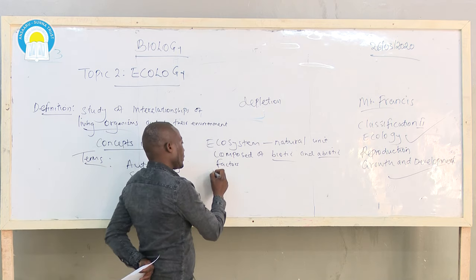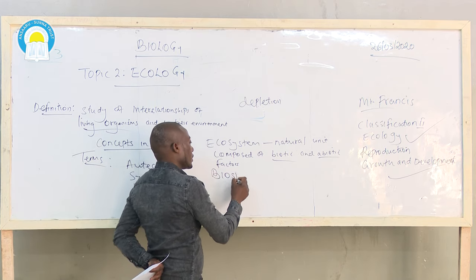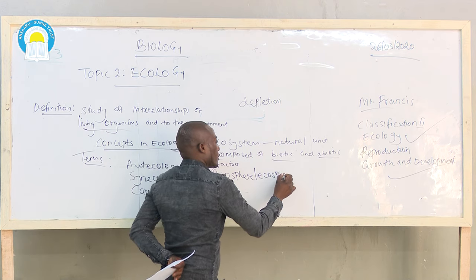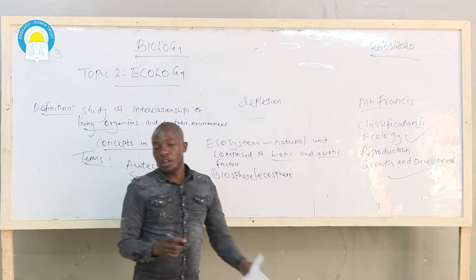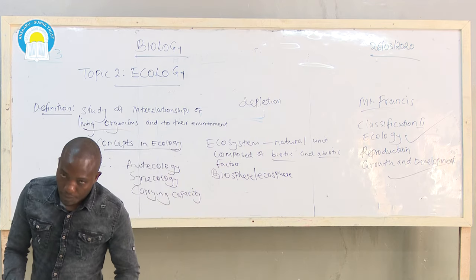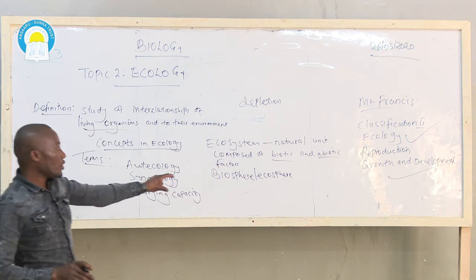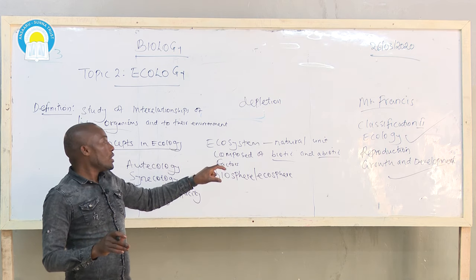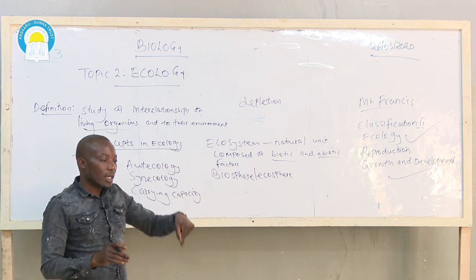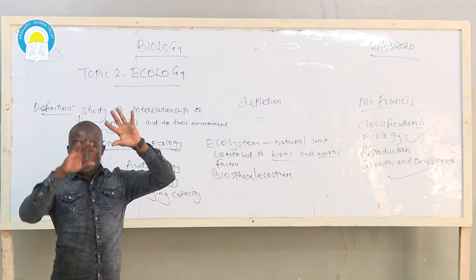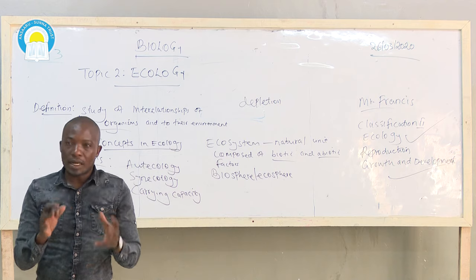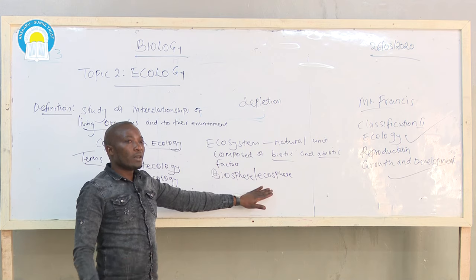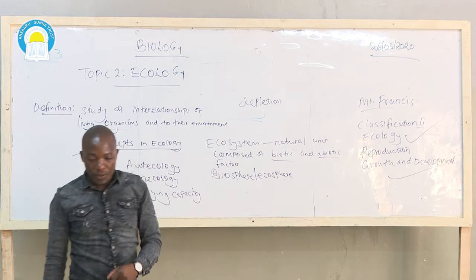The next term is biosphere, also called ecosphere — they have the same meaning. When we talk about biosphere or ecosphere, we are talking about the part of the earth and atmosphere occupied by living organisms.